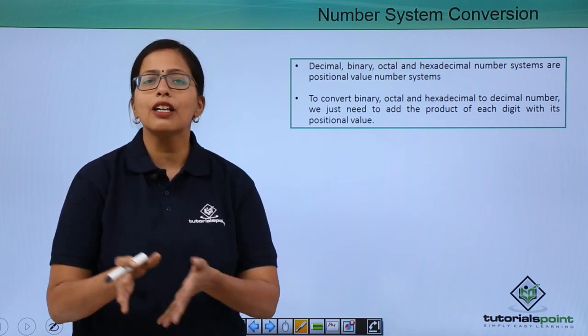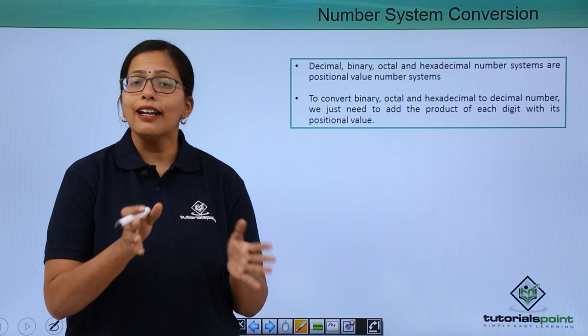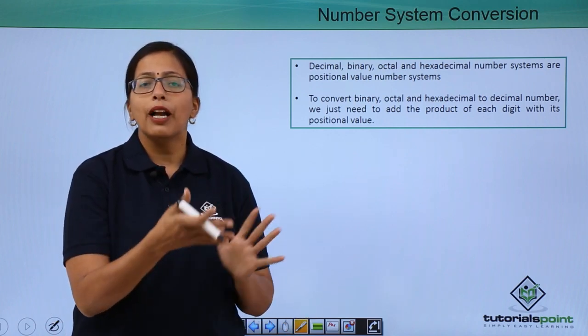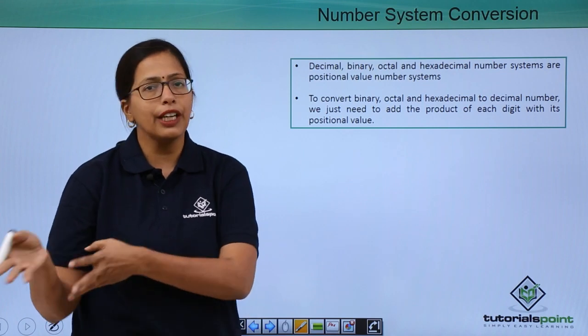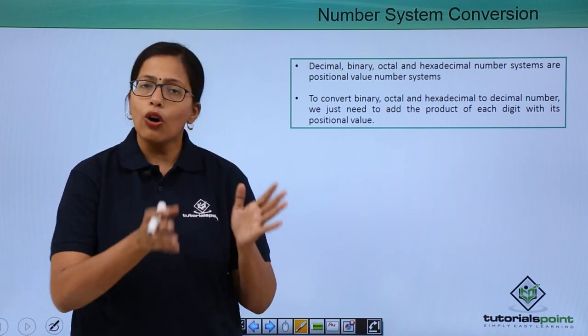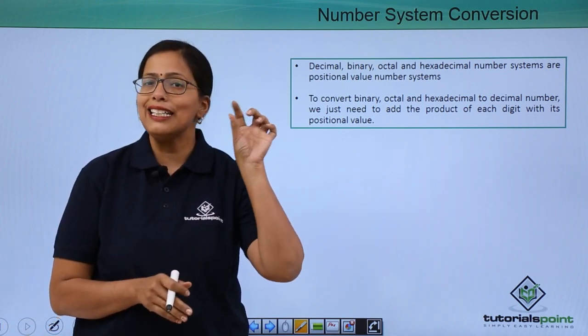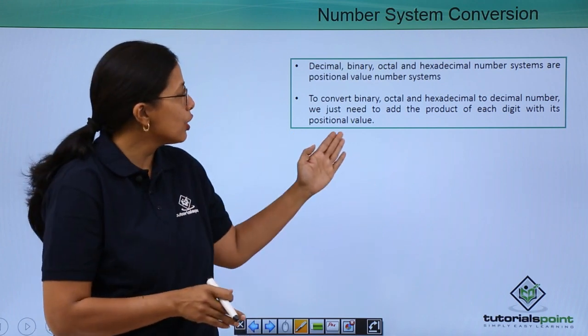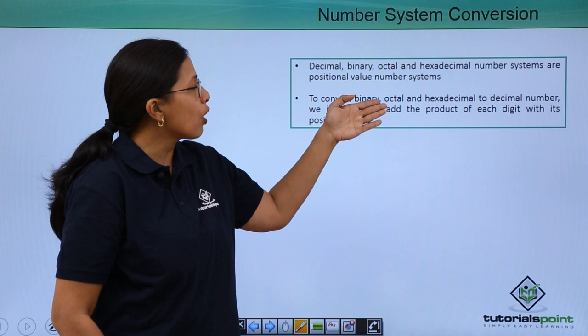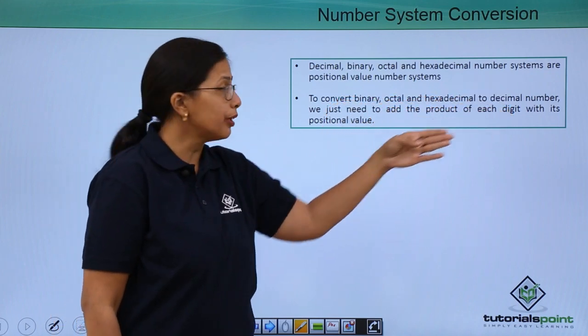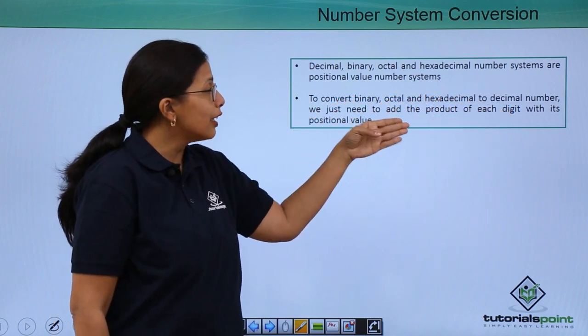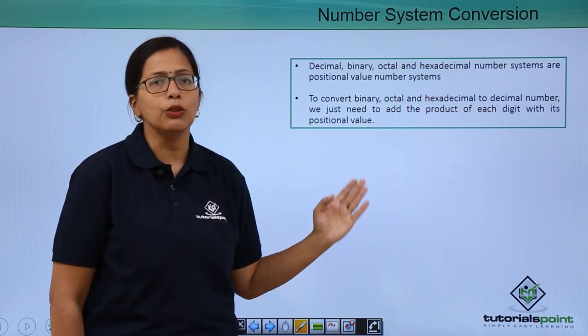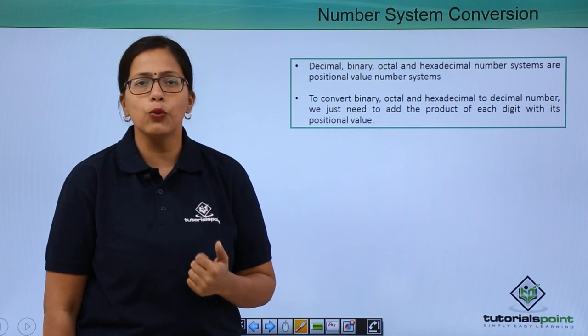We have seen that all these are positional value systems. That essentially means that when we want to convert octal, binary, or hexadecimal number into the decimal number, all we need to do is multiply each digit by its positional value and add it. Essentially, to convert binary, octal, and hexadecimal to decimal number, we just need to add the product of each digit with its positional value and you get the decimal equivalent.